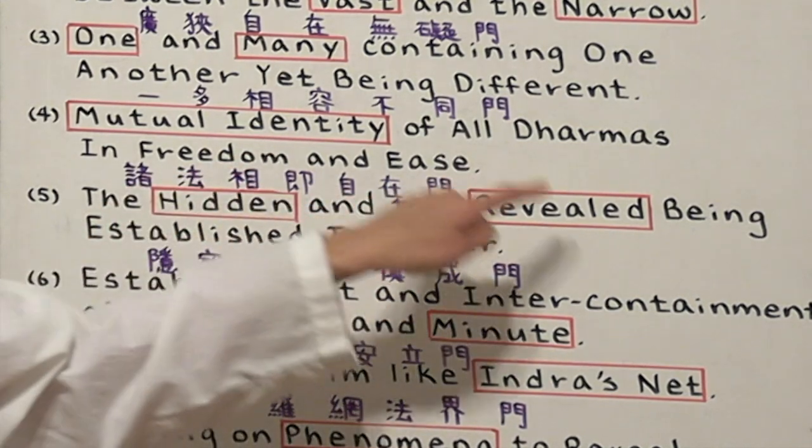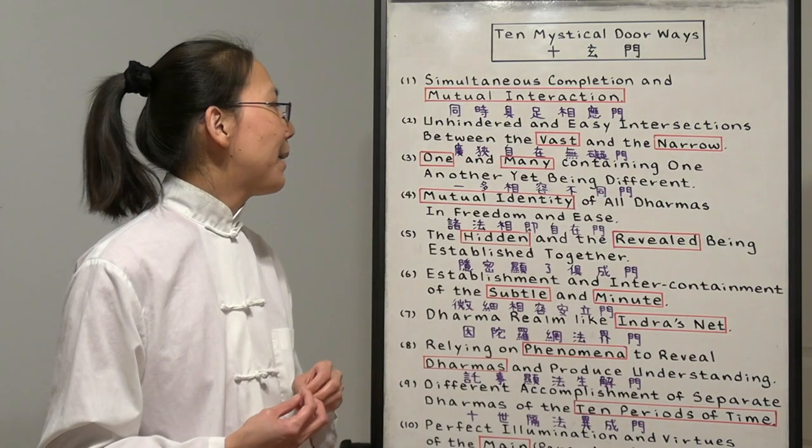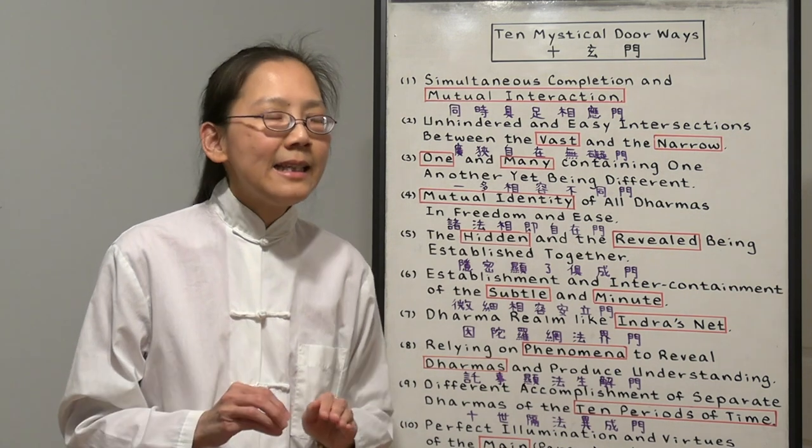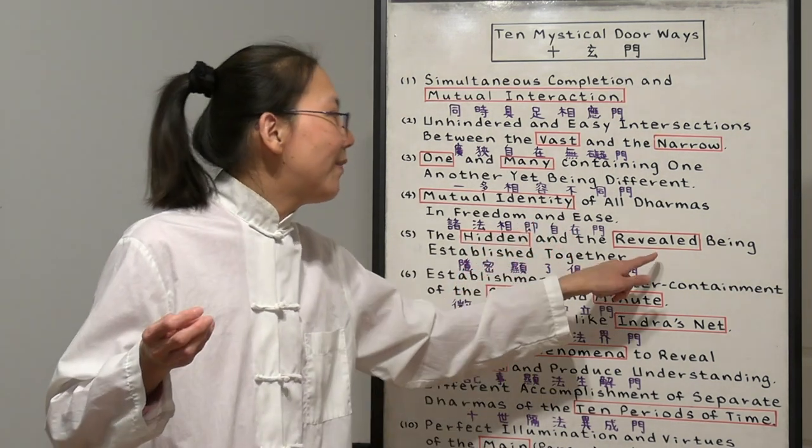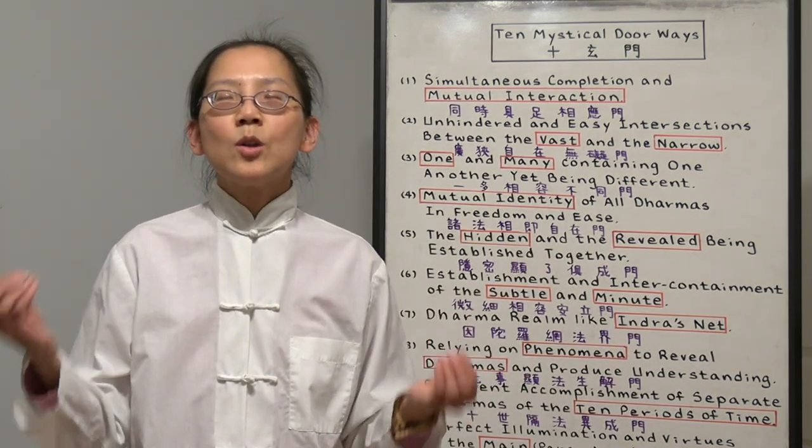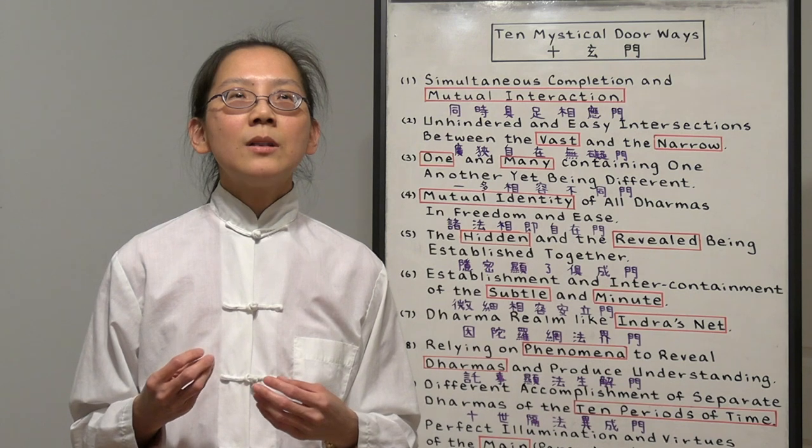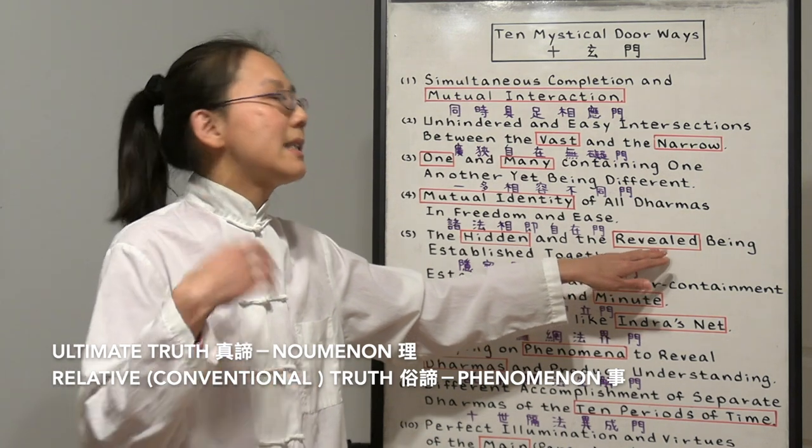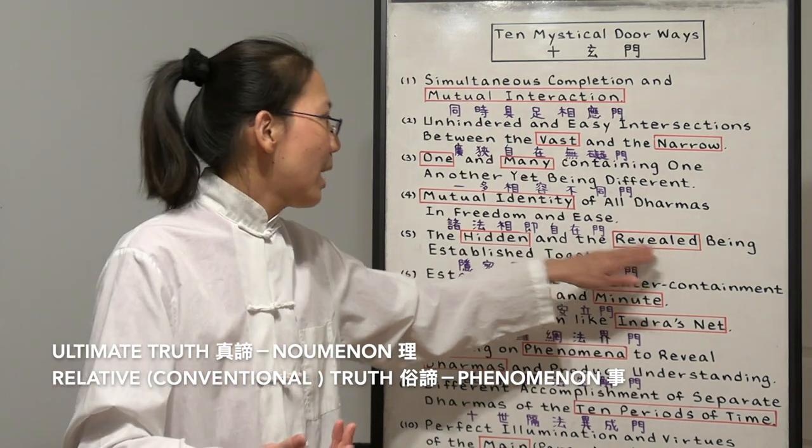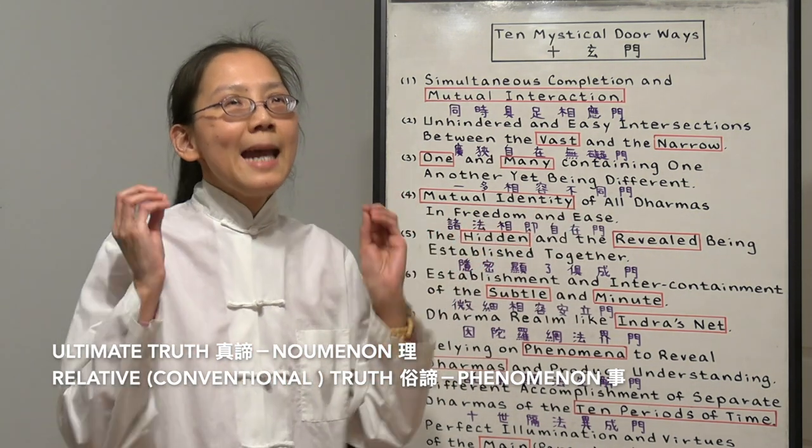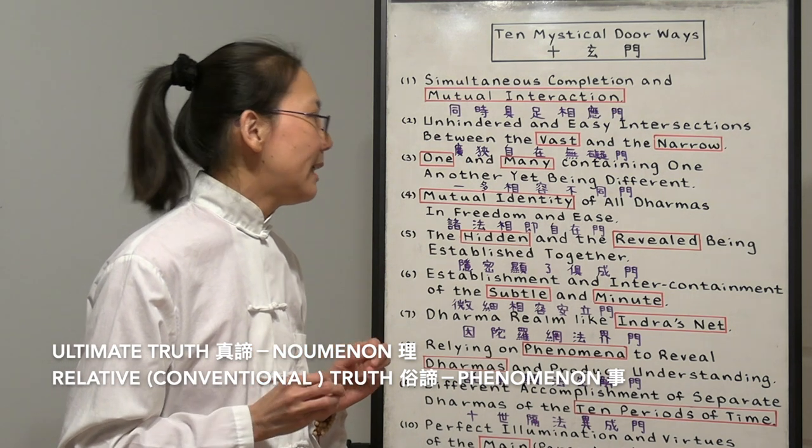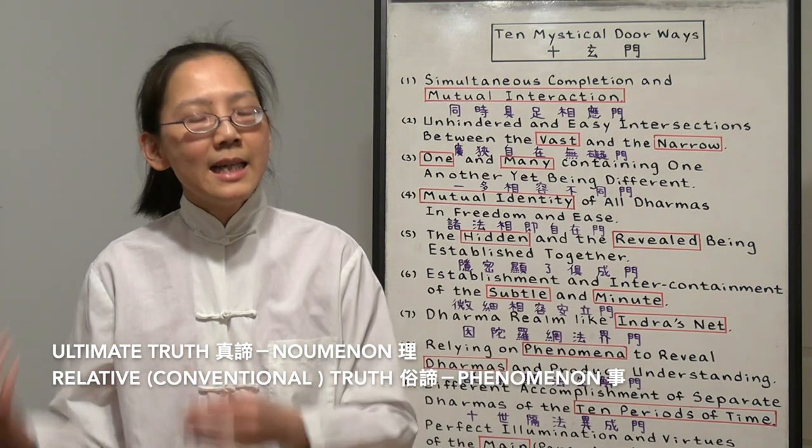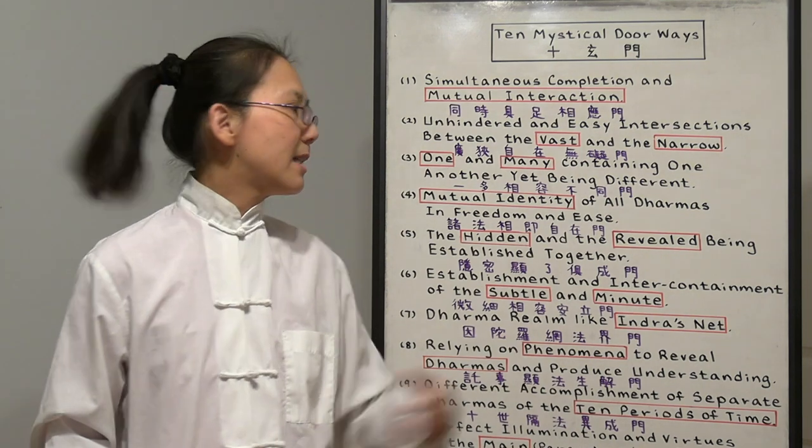Number five, the hidden and the revealed being established together. Now it's comparing what is hidden and what is revealed. Hidden is the noumenon, that is unseen. It's not in any form. We have the revealed, which is all the phenomenon that we see in our physical life. In Buddhism, we talk about the ultimate truth and the relative truth. What we see in the world, the phenomenon is the relative truth or the conventional truth. But the hidden, the noumenon is the ultimate truth, the emptiness. So we want to be able to see they are established together. The noumenon is the phenomenon. The phenomenon is the noumenon.